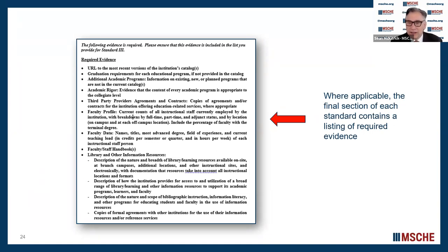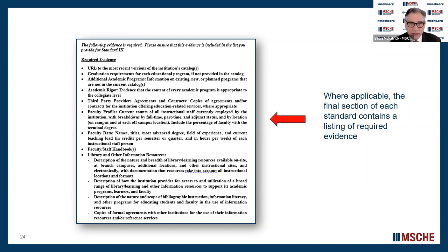The final section of each standard contains a listing of required evidence, and required means required. Here is an example where we do ask for a URL: a link to the most recent version of your institution's catalog. If you do provide the URL, please make sure that it works and that evaluators are able to click on it and go directly to the catalog. You do not want a situation where they have to click three or four times to get to the catalog. Other required information includes graduation requirements for each educational program, indications of academic rigor, faculty data, faculty profile, and information about the library.